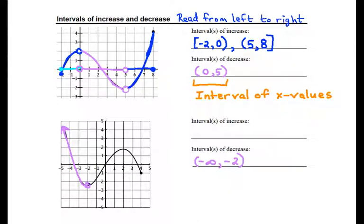We then switch over to increasing. We stay increasing right through the origin and past it and up to this hilltop here, which occurs at x equals 2. So that first interval of increase goes from negative 2 to positive 2.